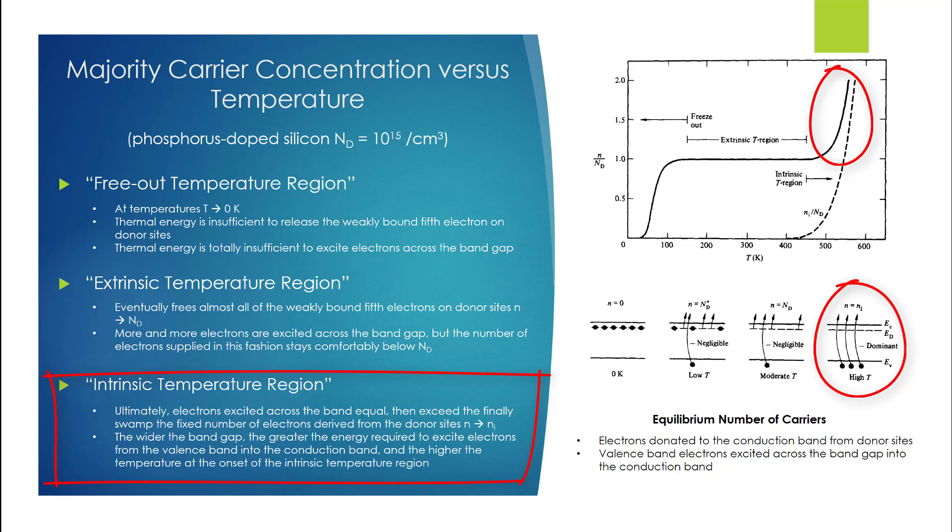As a practical note, it should be pointed out that the wider the band gap, the greater the energy required to excite electrons from the valence band into the conduction band, and the higher the temperature at the onset of the intrinsic temperature region. For this reason, silicon devices can operate at higher temperatures than germanium devices—about 200°C maximum for silicon versus about 100°C maximum for germanium. Gallium arsenide devices can operate at even higher temperatures than silicon devices.